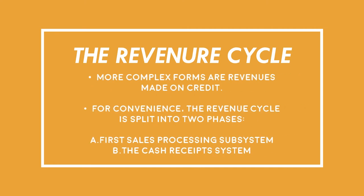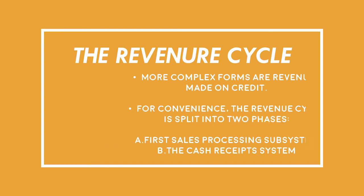More complex forms are revenues made on credit. For convenience, the revenue cycle is split into two phases: first is the sales processing subsystem, then the cash receipt system.